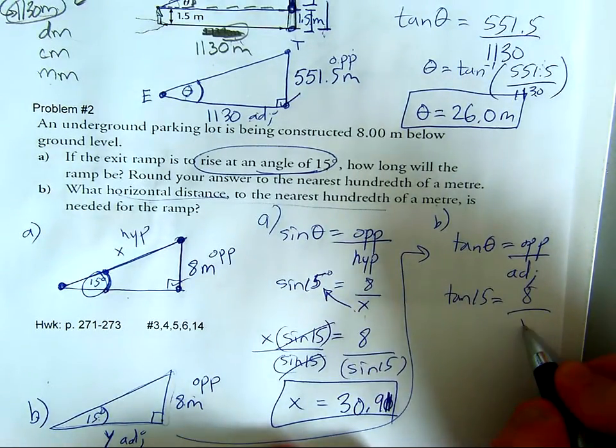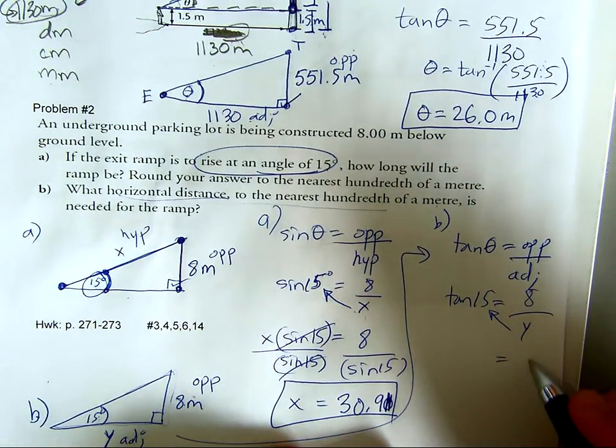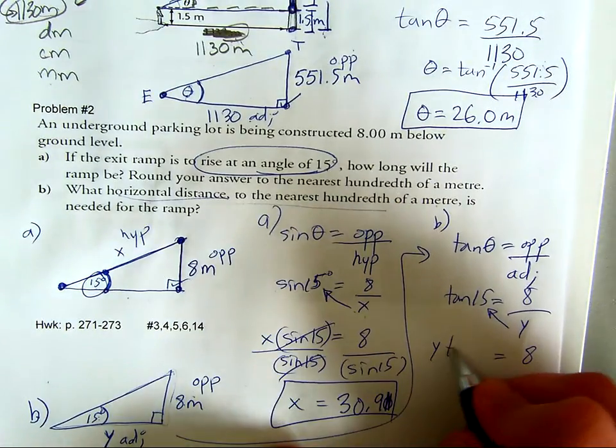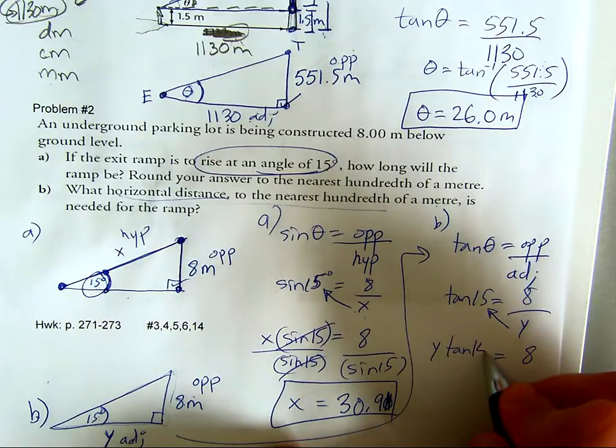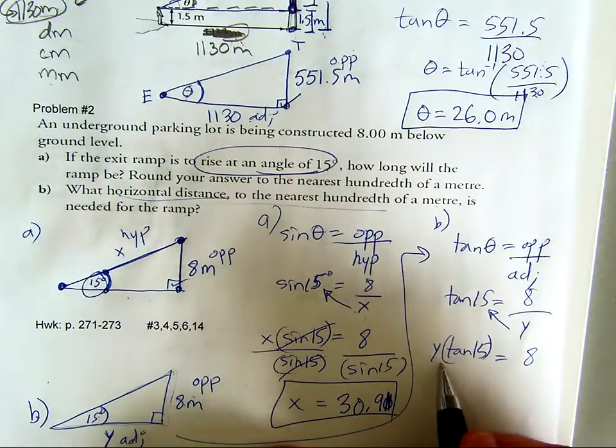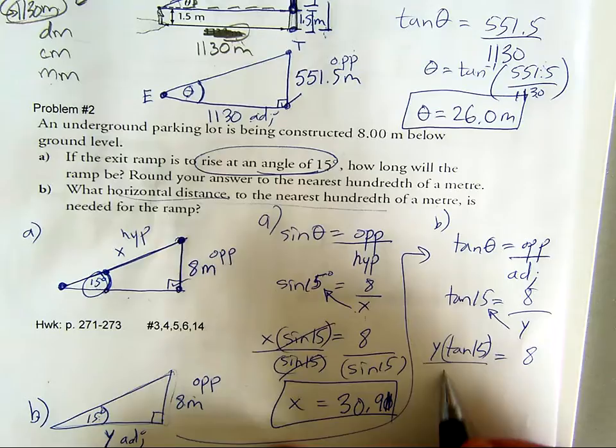I'm going to cross multiply the y first, so I'll end up with y times tan equals... wait, y times 8 equals y times tan of 15. Then how do I get rid of this? I just divide the tan of 15 from both sides.